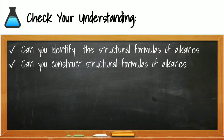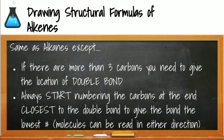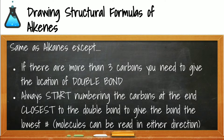By now you should be able to identify and draw the structural formula of an alkane. Drawing structural formulas of alkenes works the same way — attach carbons together and make sure every carbon has four bonds — but when a double bond is present, we use a number to specify its location. We always number the carbon chain so that the double bond has the lowest possible number.